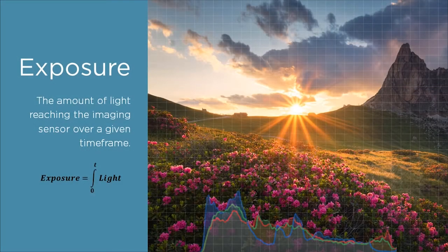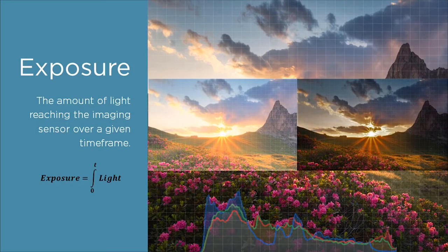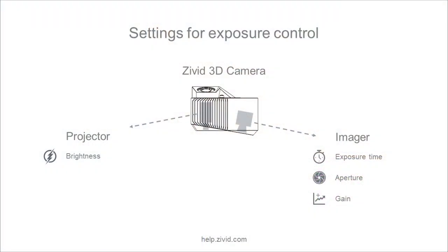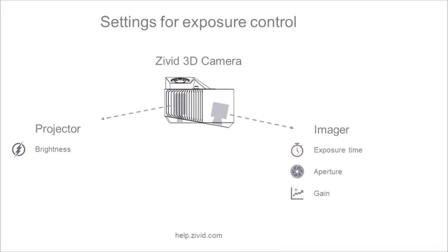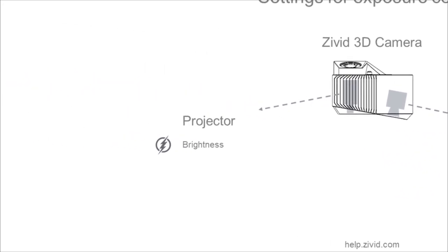Exposure is the amount of light reaching the image sensor over a given time frame, so it determines how light or dark an image will appear when it's been captured by the camera. For a Zivid camera, exposure is controlled by 4 settings: 3 on the imager side — exposure time, aperture, and gain — and 1 on the projector side: brightness.